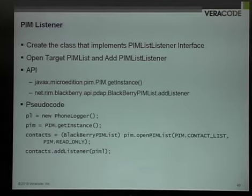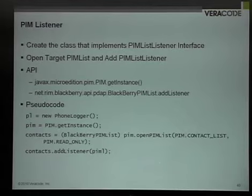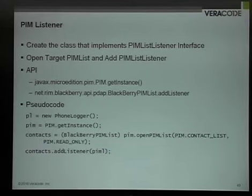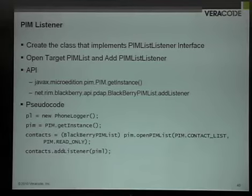The PIM listener is just like the other listeners again. At this time we trap item added, item removed, and item updated methods by implementing the PIM listener interface in a custom class. And we trap all of those and exfiltrate the updated, added, or deleted data so that you can see that in real time.